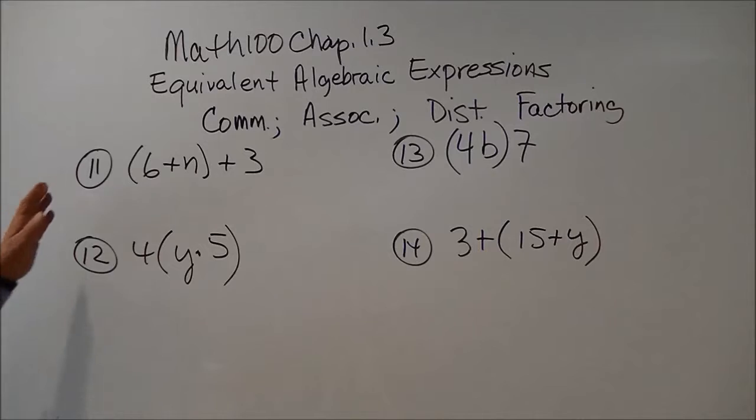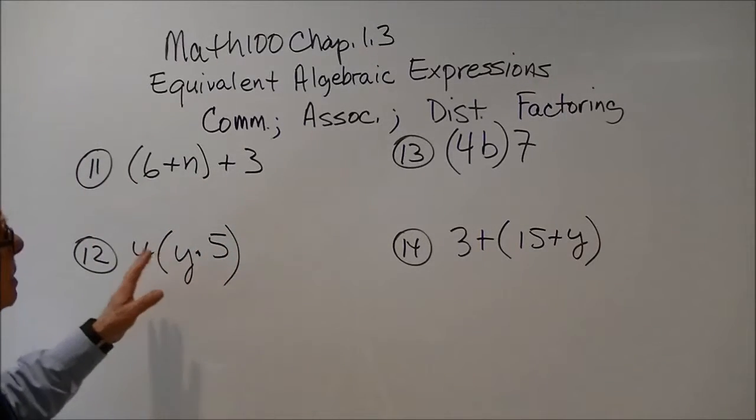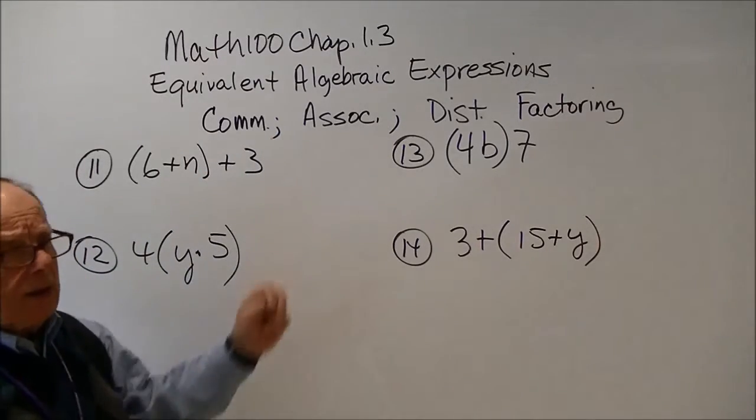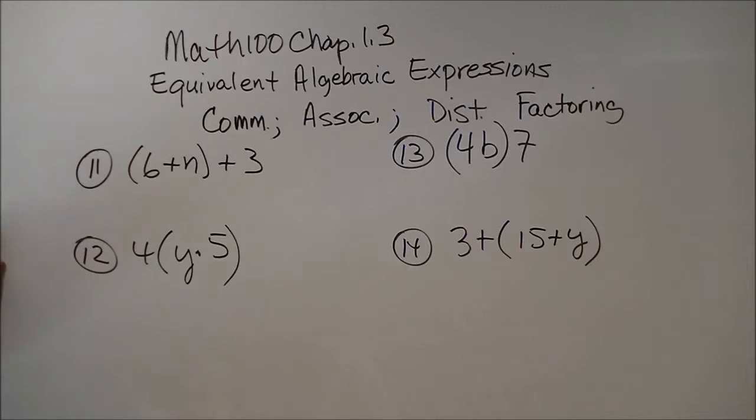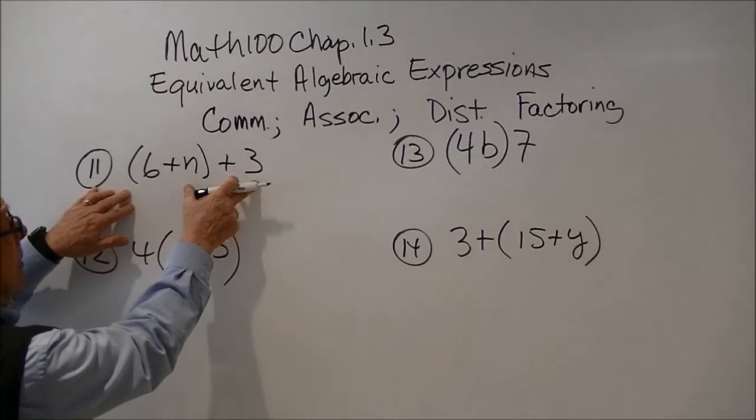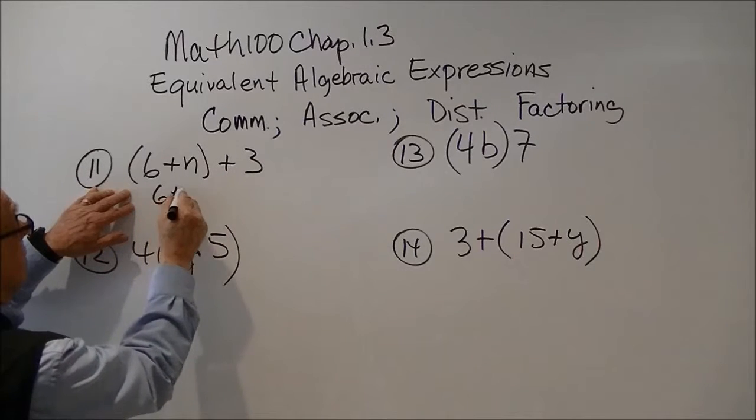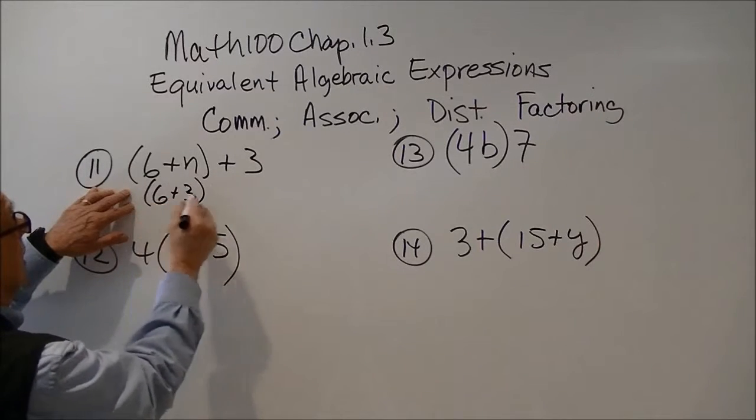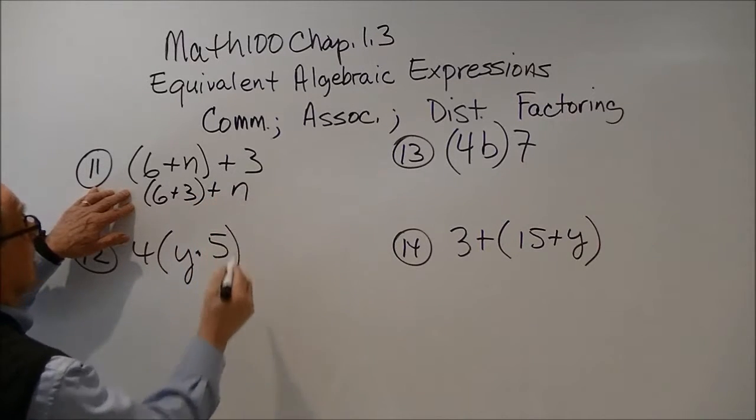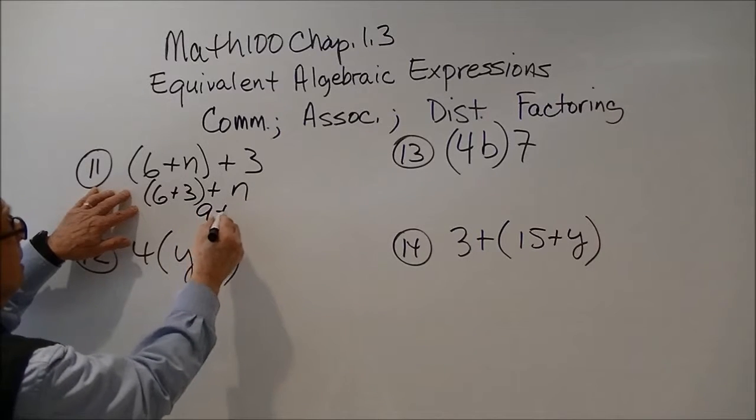Okay, in this next few examples, we're asked to sort of simplify, keeping in mind these basic laws that we're using. So for this one, we can switch the 3 and the n around. And that would give us 6 plus 3 plus n. And then when we simplify that, that's 9 plus n.